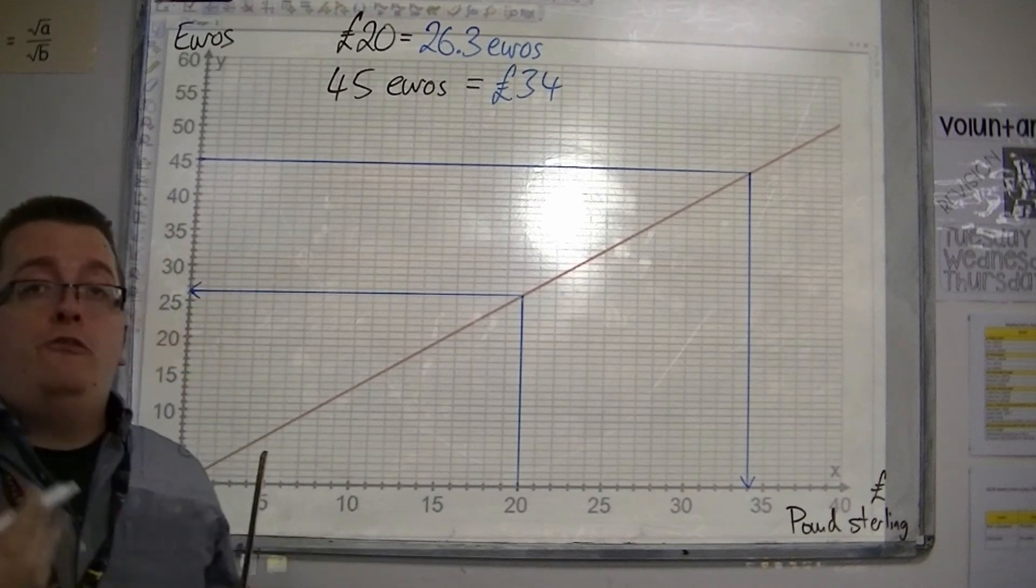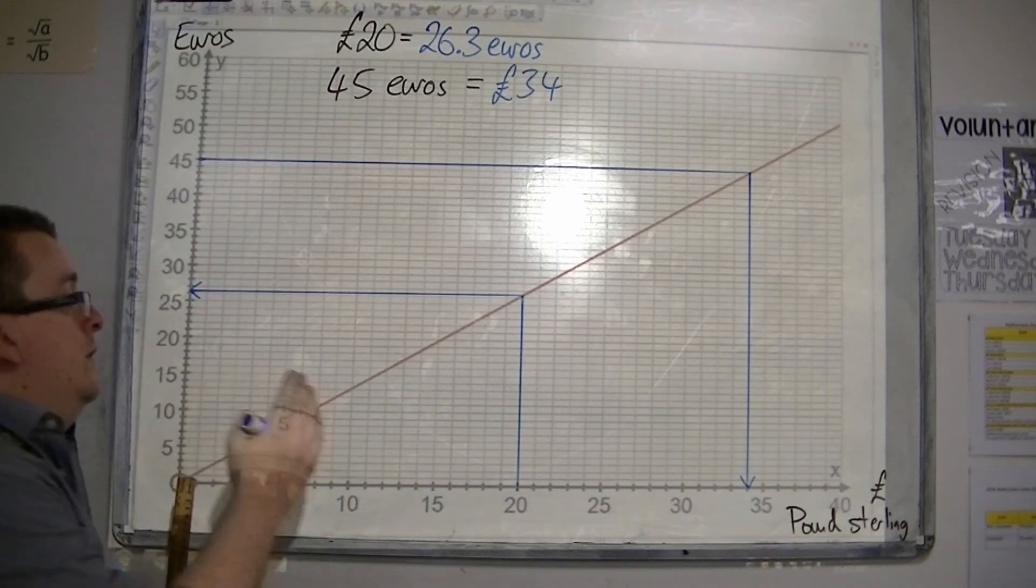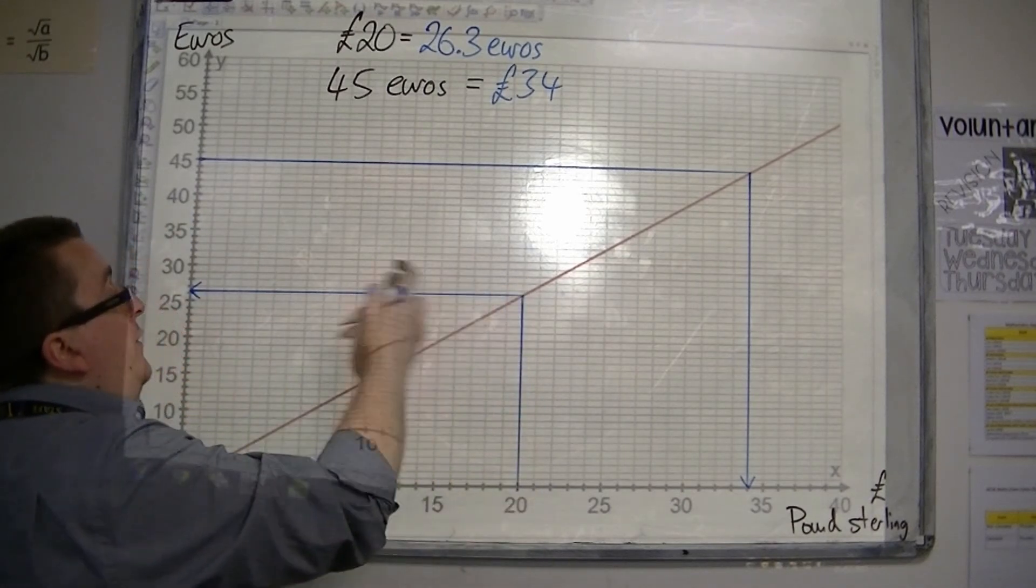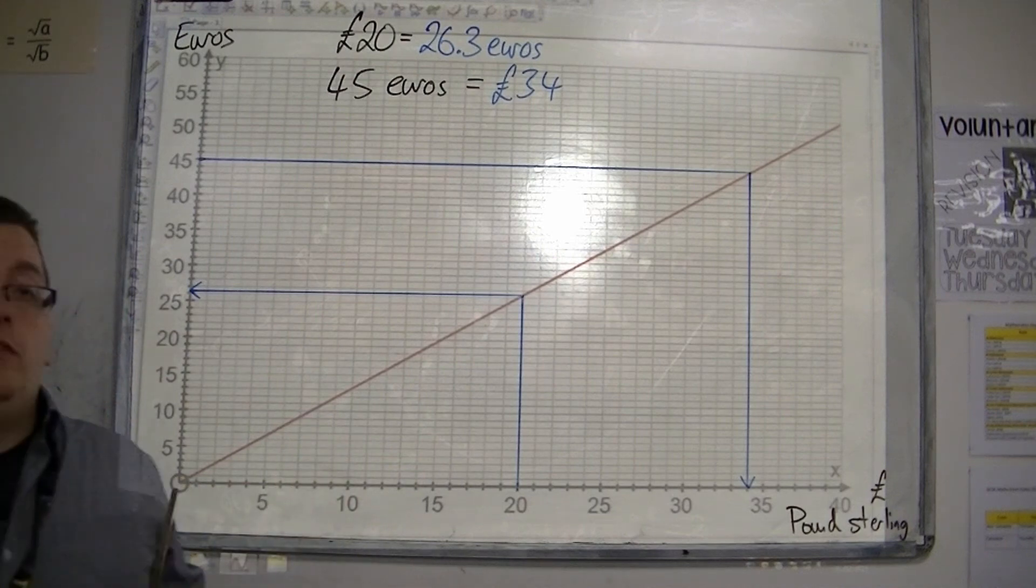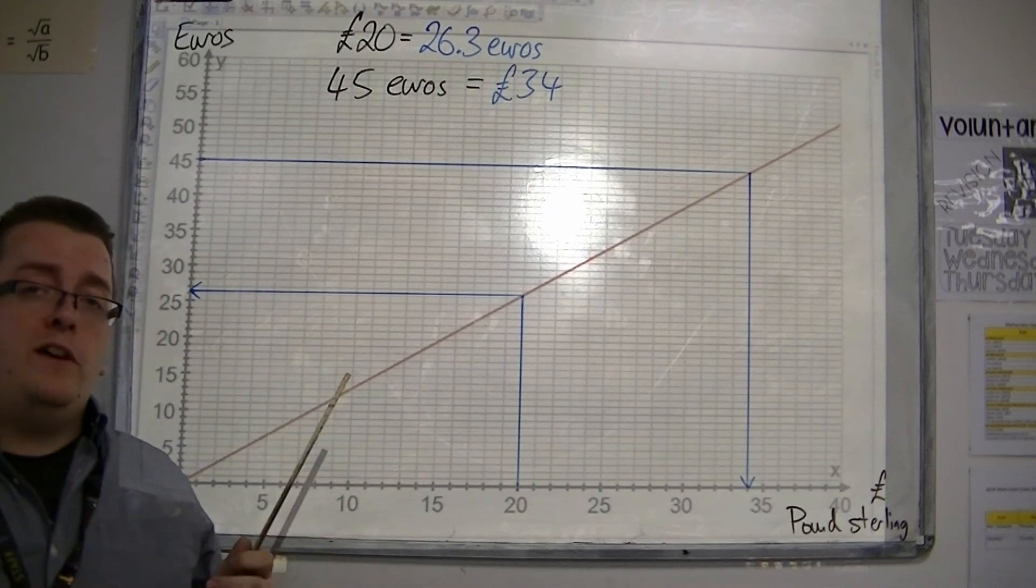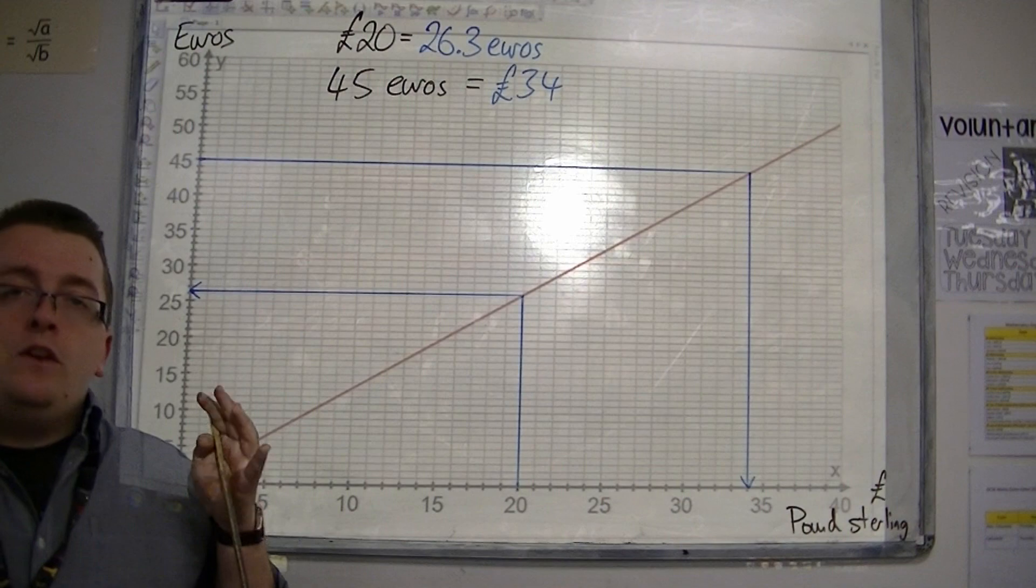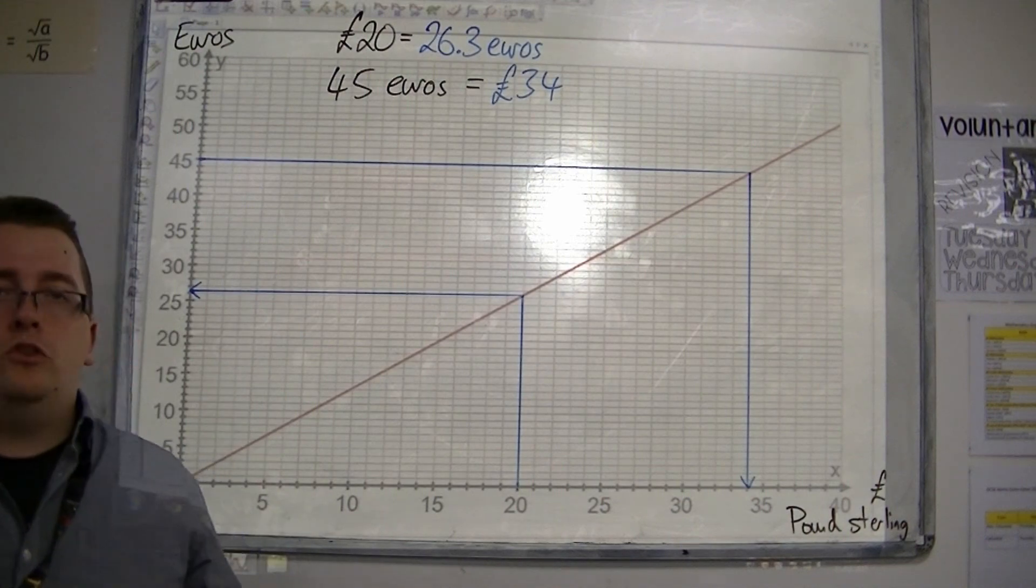And that's how we read off from a conversion graph. Working from one axis to the other, like so. And make sure you draw the lines on. They do really help, and they also show the examiner what you're trying to do.